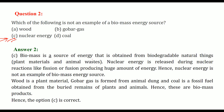Biomass is a source of energy obtained from biodegradable natural things — it can be from plants or from animal waste. Nuclear energy, on the other hand, is produced during nuclear reactions like fission and fusion.